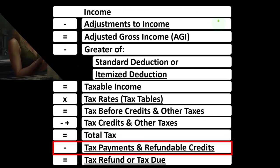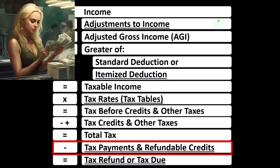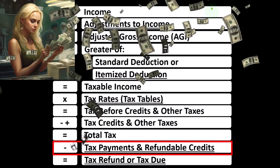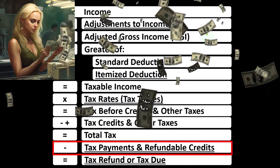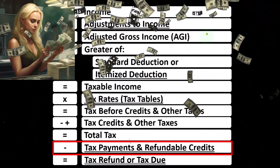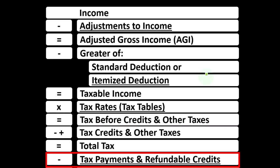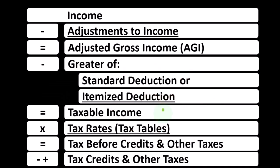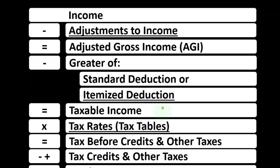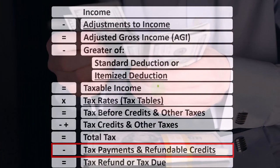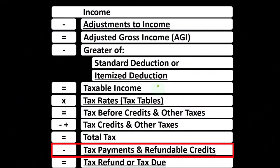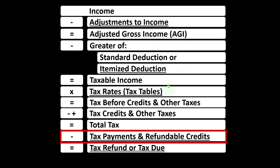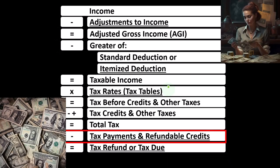Remember, the first half of the income tax formula is in essence an income statement, although a strange one, where we have income minus the above-the-line deductions or adjustments to income to get to adjusted gross income, minus the greater of the standard or itemized deductions to get to the taxable income, which is basically the equivalent of an income statement's net income. Then we apply the tax calculation onto that taxable income, not with a flat rate but with the progressive tax tables, and that gives us the tax before credits and other taxes.